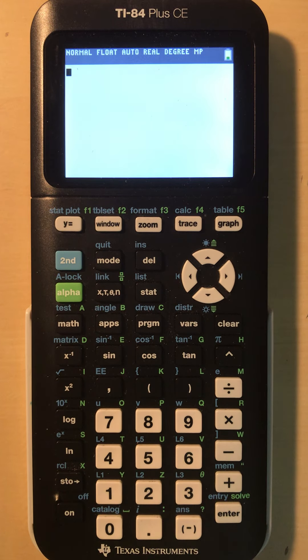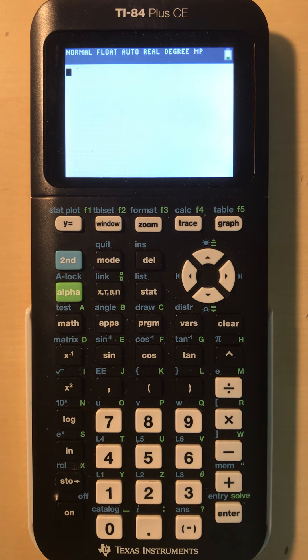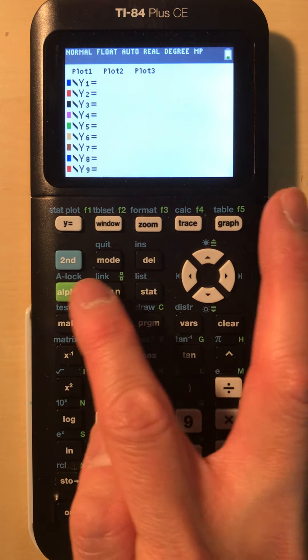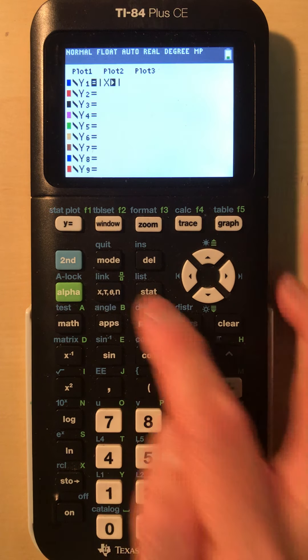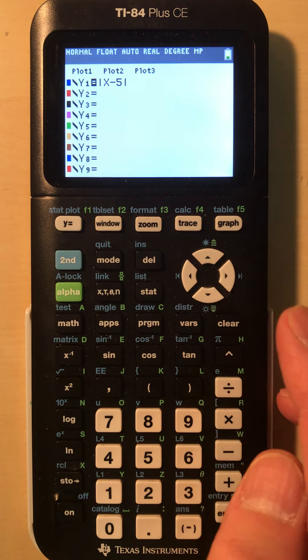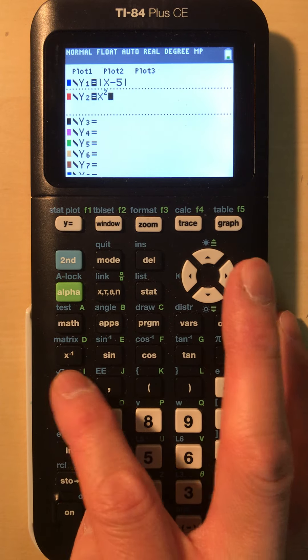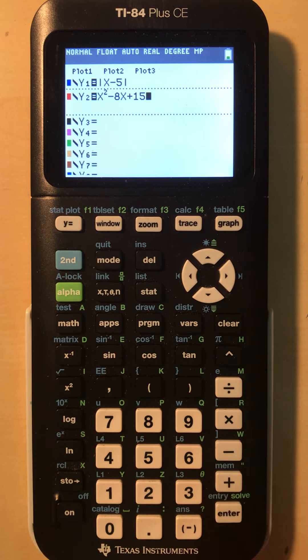Okay, let's do another example. We have the absolute value of x minus 5 equals the quadratic x squared minus 8x plus 15. Just like we did in class, let's graph the first one, which is the absolute value function of x minus 5, and then the second one, x squared minus 8x plus 15.